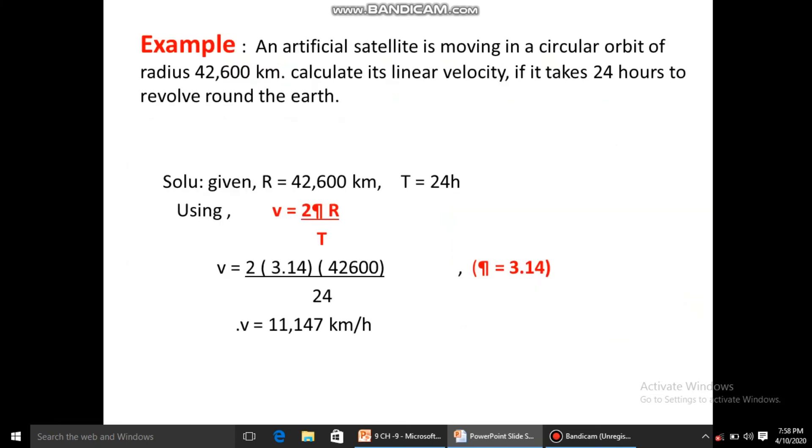Now we have an example to understand more clearly about uniform circular motion. An artificial satellite is moving in a circular orbit of radius 42,600 km. We have to calculate its linear velocity if it takes 24 hours to revolve around the earth. Using the formula v equals 2πr divided by T, where π is 3.14, radius is 42,600 km and time is 24 hours. The answer is 11,147 km per hour. This is the linear velocity of that particular satellite.